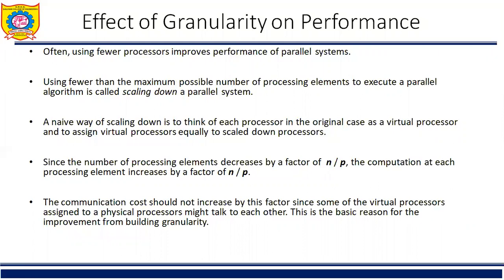I will repeat it once again. The cost of solving a problem on a parallel system is the product of parallel runtime and the number of processing elements used. Cost is sometimes also referred to as 'work' or 'processor time product,' and a cost-optimal system is also known as a PTP-optimal system.